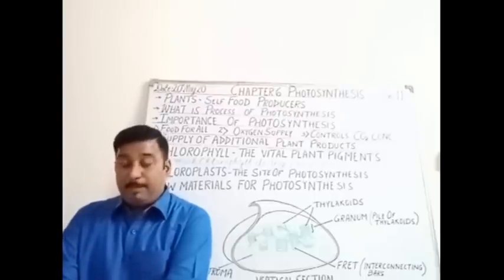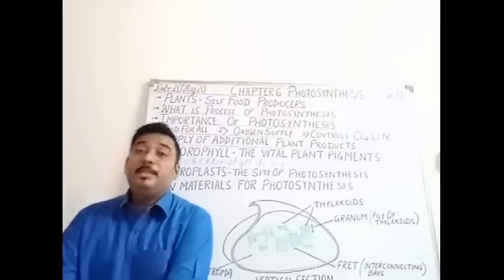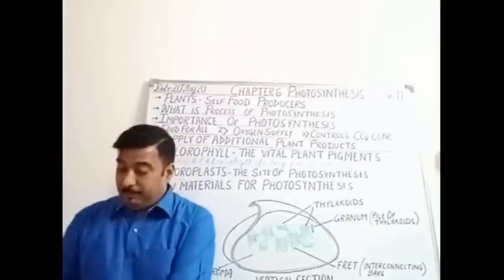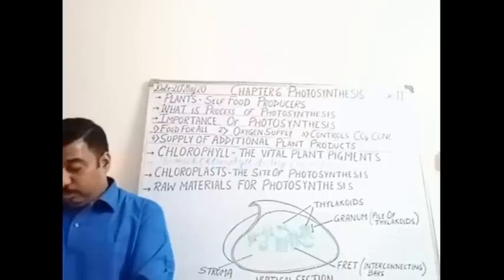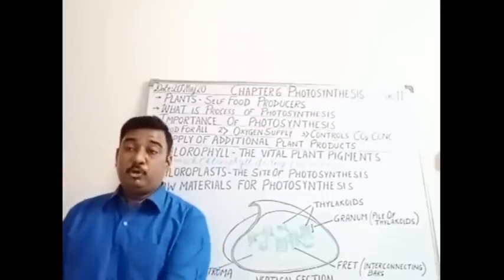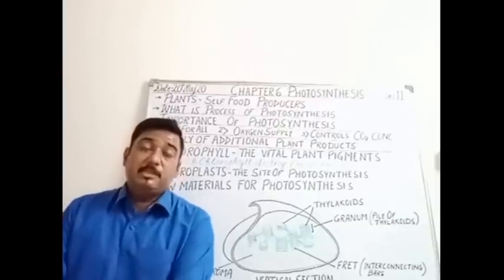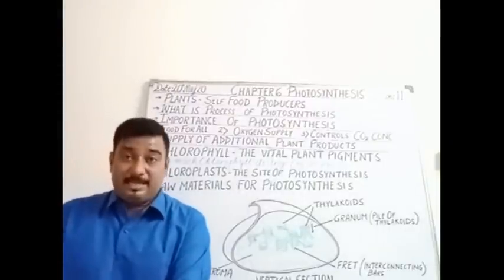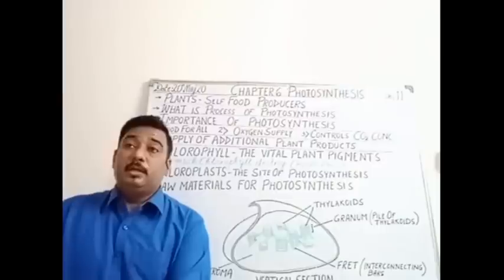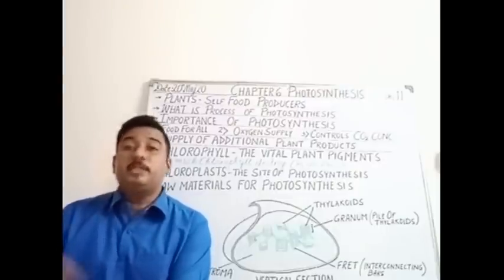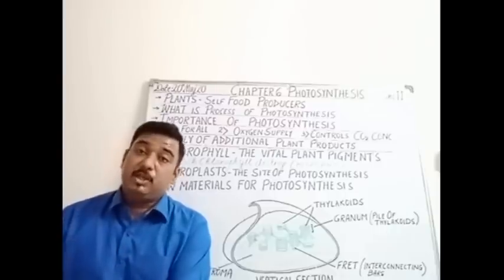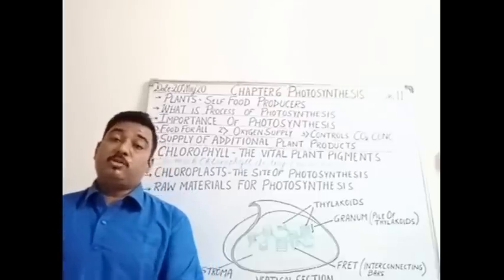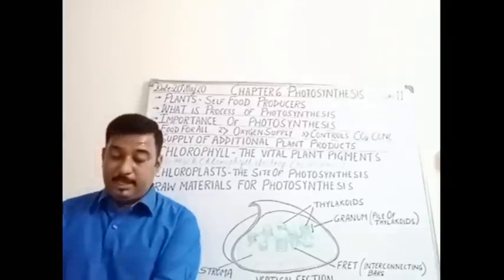Photosynthesis helps to keep the carbon dioxide concentration in the atmosphere constant — carbon dioxide is taken in and oxygen is given out. Carbon dioxide being released during respiration by living organisms is used during the process of photosynthesis. All living organisms release carbon dioxide as a byproduct of respiration, and this carbon dioxide is used during photosynthesis. In this way, green plants and the process of photosynthesis maintain and control the carbon dioxide concentration.